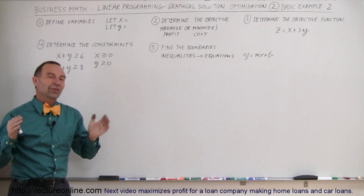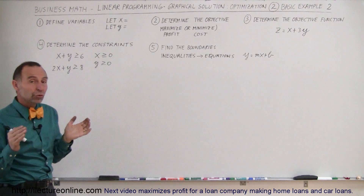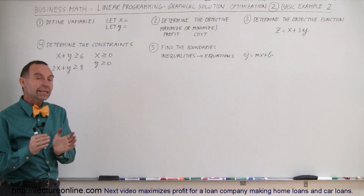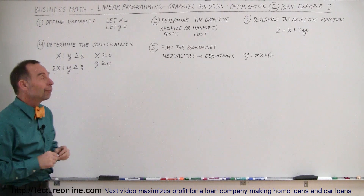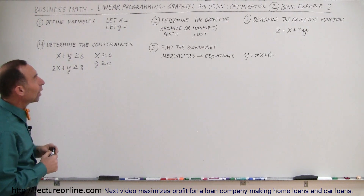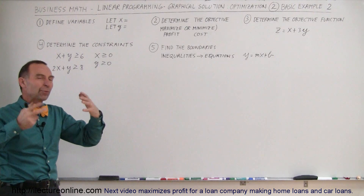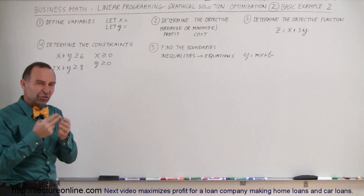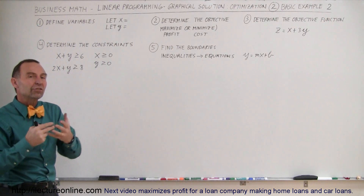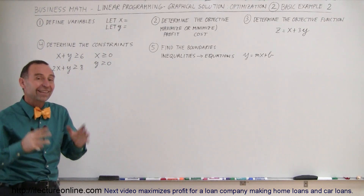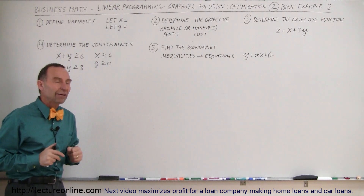Welcome to ElectronLine, and here's our second basic example of a linear programming problem. We're going to do the graphical solution only, which usually limits you to just two variables, x and y. We're not starting with a word problem — we're just given the equations and inequalities, and we want to go through the nine steps of how to do a linear programming problem using graphical solutions.